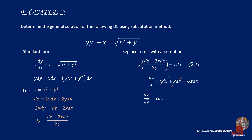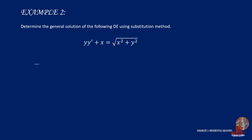So we have another separable DE, which can then be written as z raised to negative 1 half times dz is equal to 2dx. Then we are ready to integrate. Through integration, we take z raised to negative 1 half plus 1 all over positive 1 half is equal to 2x plus c. The left term simplifies as 2 root of z, where 2 can be cancelled out from both terms.